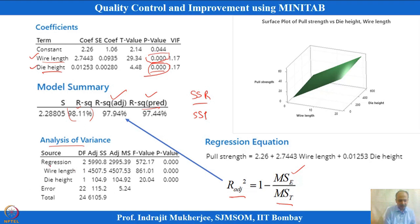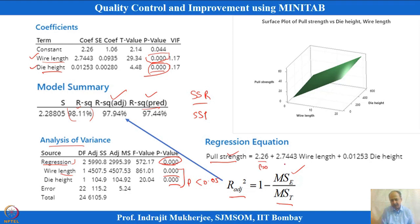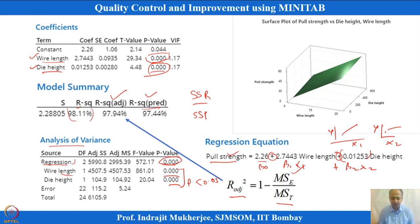Analysis of variance shows whether, with both variables, the overall regression equation is significant — and yes, it is. Both wire length and die height have p-values less than 0.05, so both are important and should be included. The final equation from MINITAB is: expected strength = beta_0 + beta_1*x1 + beta_2*x2. Both coefficients have positive signs, meaning y increases as x1 increases and as x2 increases.